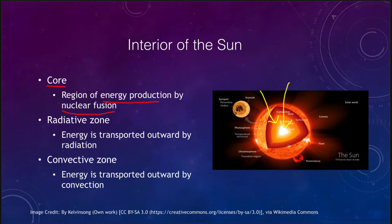And then finally we end up at the outer layers towards the convective zone, which is the outermost layer of the interior of the Sun. In this region energy is transported as you might expect by convection. So here by convection, in the radiative zone by radiation.